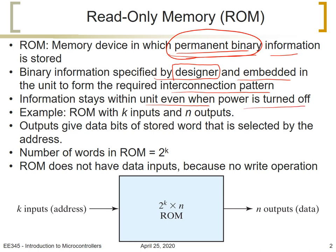We give an example here for a ROM that has K inputs and N outputs. The outputs give the data bits of the stored word in the memory that is selected by the address, so the K bits input is the address line and the word at this address will be read. The outputs will be the N bits of this word.